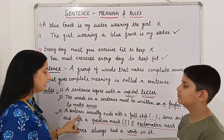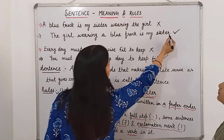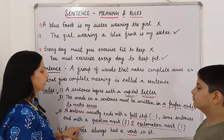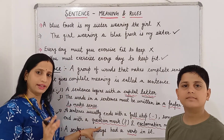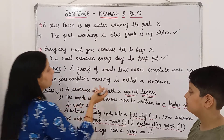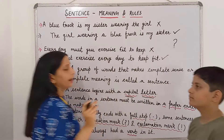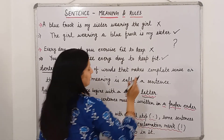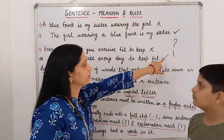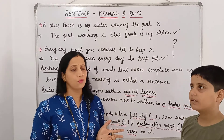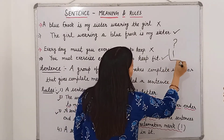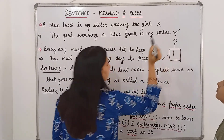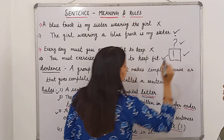The third rule: a sentence usually ends with a full stop. As you can see, both sentences are ending with a full stop. But sometimes some sentences end with a question mark when we ask a question — for example, 'Is it raining outside?' or 'What are you doing?' And sometimes sentences have exclamation marks, for example: 'What an interesting book!' or 'What a beautiful painting!' So a sentence usually ends with a full stop, question mark, or exclamation mark.